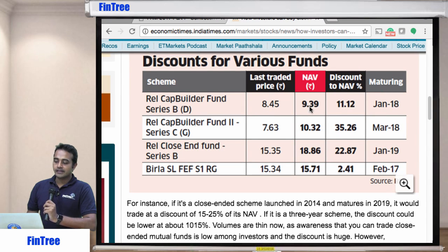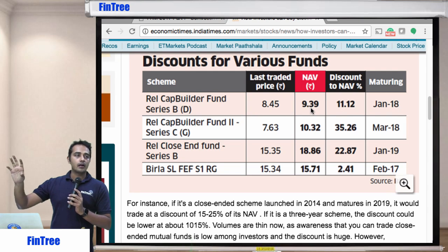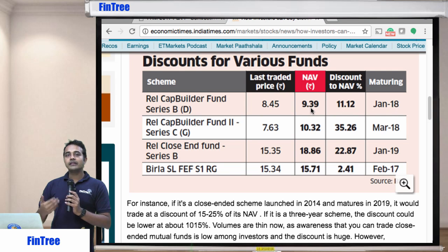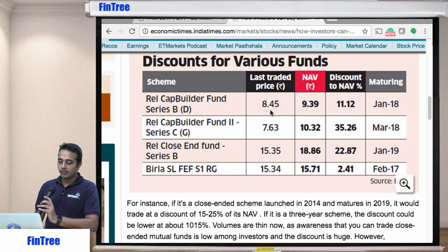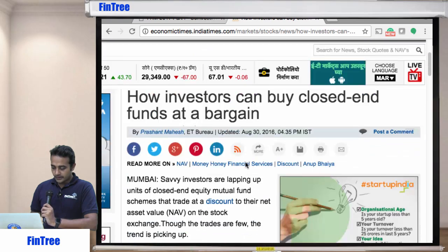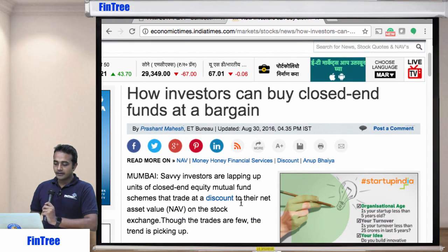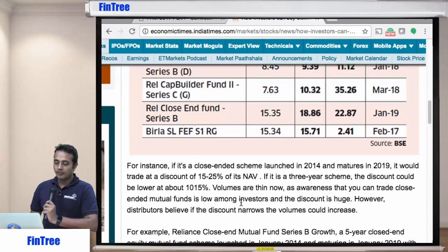This is the last traded price and this is the NAV. So NAV is calculated as: what are the total assets with the asset management company minus liability divided by number of units. So if that mutual fund company decides to sell off all the assets, pay off all the liabilities, and then pay to every shareholder, each shareholder will receive 9.39. But the traded price for this mutual fund was 8.45. And maturing is January 18. So January 18 from the date of this article - August 2016 - that's about 18 months.